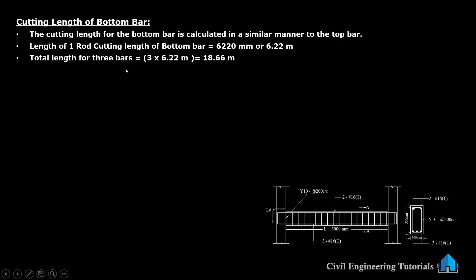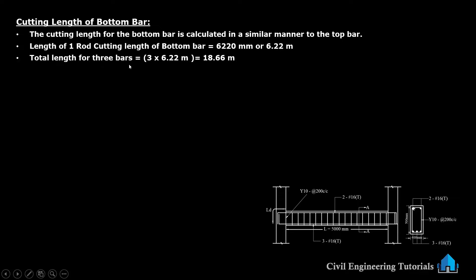Total length for three bars: in top bar, we calculated total length 6.22 multiplied by 2 because there were 2 numbers of bars. But in bottom bar, we have 3 numbers of bars — three numbers of 16 mm dia. So total length: cutting length 6.22 meter into 3. We are getting total length for three bottom bars: 18.66 meter.